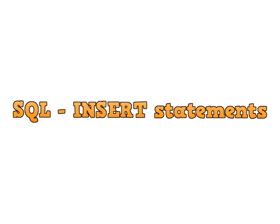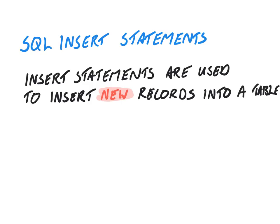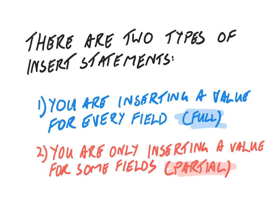In this tutorial we're going to look at INSERT statements for SQL. A SQL INSERT statement is when you're putting in a new record into a table or a database, such as a new member of staff, a new item, a new course, anything along those lines. There are two types of INSERT statements: one where you're inserting a value for every single field in a table, which we'll refer to as a full INSERT statement, and one where you only have certain pieces of data and you're not putting in a value for every single field, which we'll refer to as a partial INSERT statement.